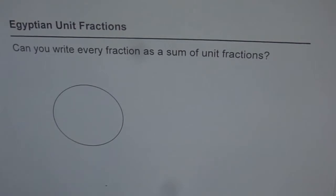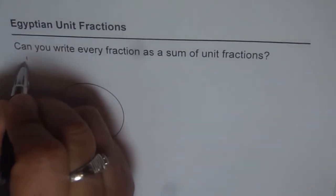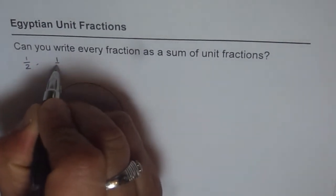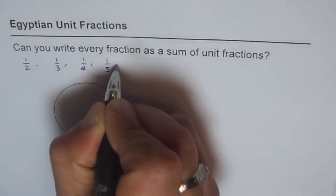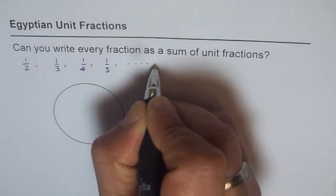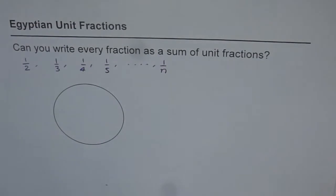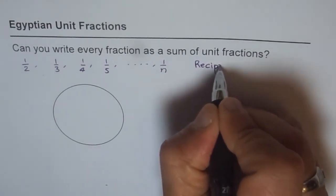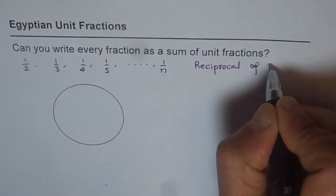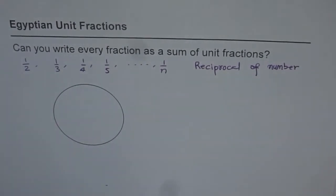First let's understand what are these unit fractions. Unit fractions are fractions like 1 over 2, 1 over 3, 1 over 4, 1 over 5 and so on, like 1 over n. So n could be any number. So fractions like this, which you can also say reciprocal of a number, are basically unit fractions.